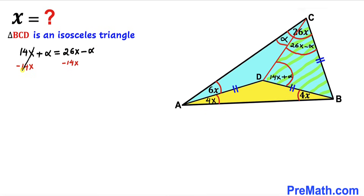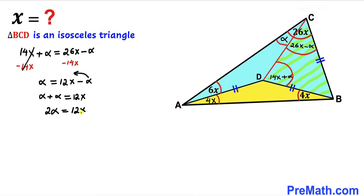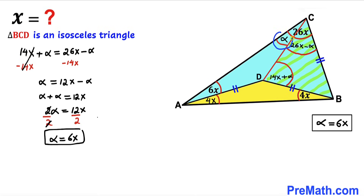Subtracting 14x from both sides gives alpha equals 12x minus alpha. Moving alpha to the left: alpha plus alpha equals 12x, so 2·alpha equals 12x. Dividing both sides by 2, alpha equals 6x.